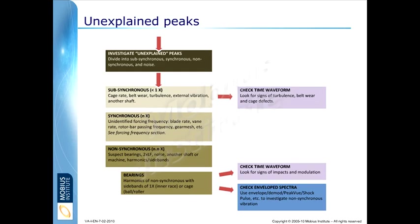Now, there's so much we could talk about with these topics. But first, you're going to look at whether it's a sub, whether these peaks are sub-synchronous, lower than running speed. Because there's only certain reasons that that vibration might be generated. It might be the cage rate of the bearing. It might be belt wear, turbulence, external sources of vibration, or another shaft. So, there's some ideas.